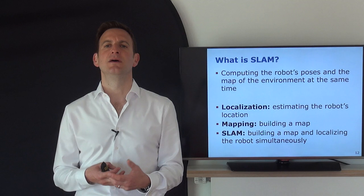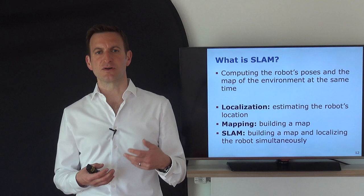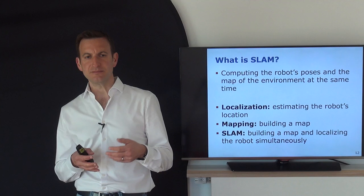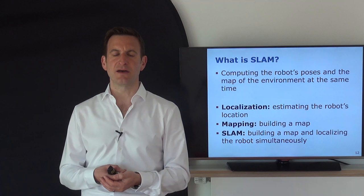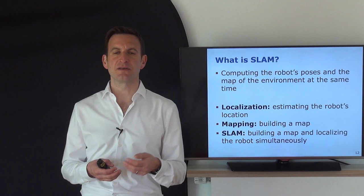This model can be a dense 3D model, or it can be positions of distinct points in the environment — features extracted from sensor data — estimating the location of those features or landmarks. We can then use that model to estimate our pose. There are three problems that come together here: localization, mapping, and SLAM.